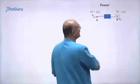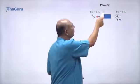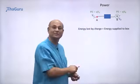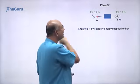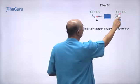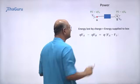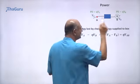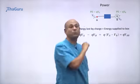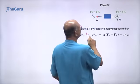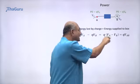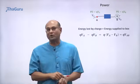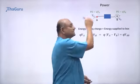So the potential energy of the charge has decreased. The energy lost by the charge is Q times VA minus Q times VB, which can be written as Q times (VA minus VB), or Q times VAB — Q times the potential drop from this point to that point. That is the energy lost by the charge, and it is also the energy supplied to the box. When the charge loses energy, it gives that energy to the box.